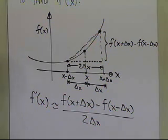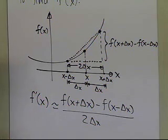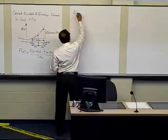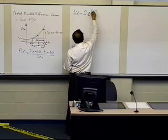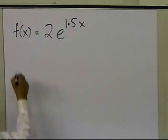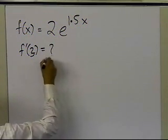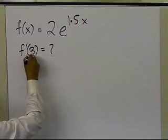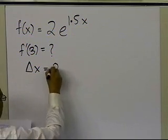Now let's go ahead and take an example to see what kind of approximation we get for the first derivative of the function. So let's take f(x) = 2e^(1.5x). We want to find out the derivative of the function at x = 3, and we're going to choose Δx = 0.1.